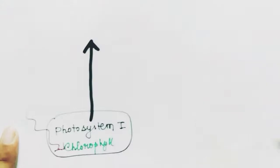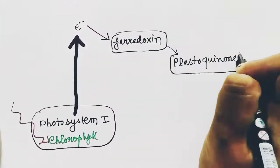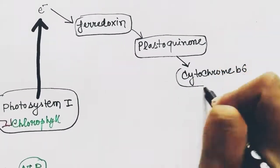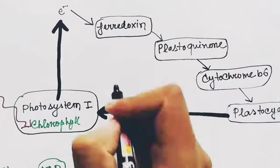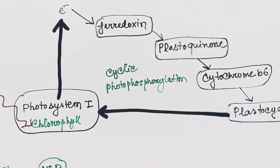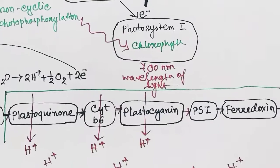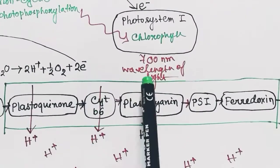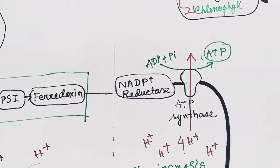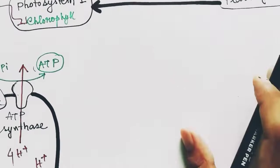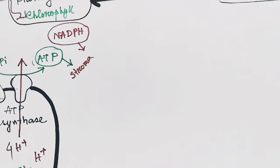Now if the plant has to produce ATP only — not NADPH — then it will switch to cyclic photophosphorylation, where only PS1 is included. Photosystem 1 will give the electron to ferredoxin, then plastoquinone, then cytochrome b6, and then to plastocyanin. From here the electron will come back to PS1, so it is called cyclic photophosphorylation. In this case, NADPH reductase is not involved — only hydrogen ions will be involved to form ATP.